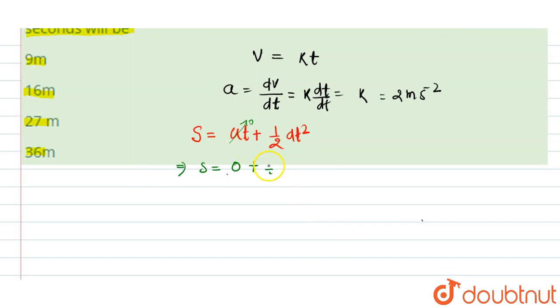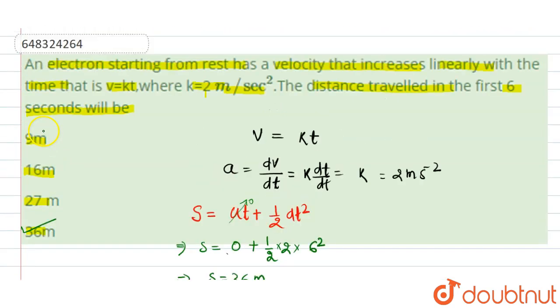½ into acceleration is 2 m/s² and time is 6 seconds, so 6 squared. We are getting displacement equal to 36 meters. So our fourth option is the right answer. Thank you.